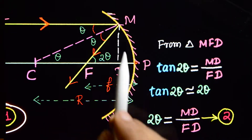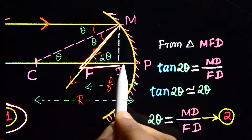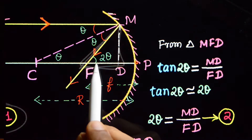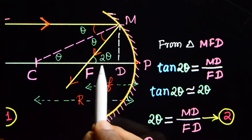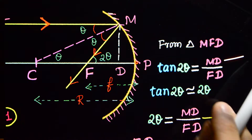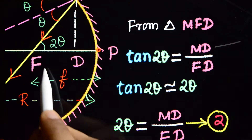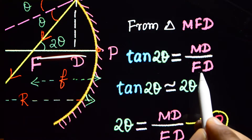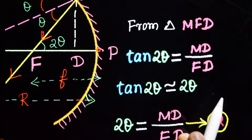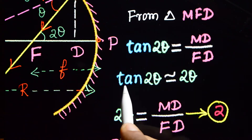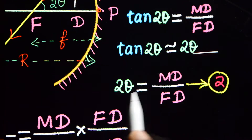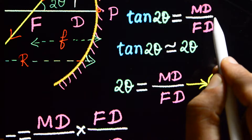From triangle MFD, which is also a right-angle triangle: tan 2theta is equal to MD divided by FD. Since theta is very small, tan 2theta is nearly equal to 2theta.